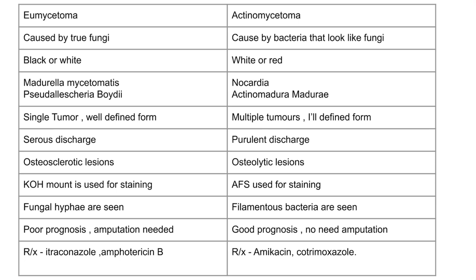For staining and microscopy, KOH mount is used for eumycetoma, while acid-fast staining is used for actinomycetoma. Under the microscope, eumycetoma shows fungal hyphae, while actinomycetoma shows filamentous bacteria.